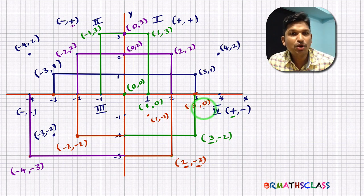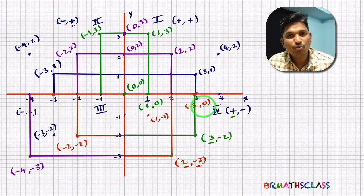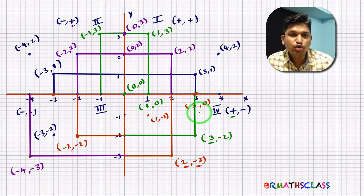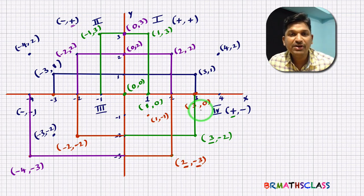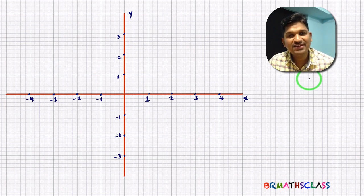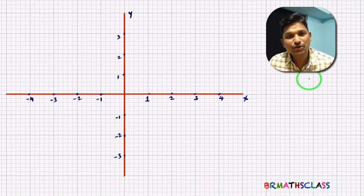In the last class, we learned about what is a coordinate system. In this class, we will learn what are coordinates, what is abscissa, what is ordinate, signs of a point in different coordinates, and how to plot a point on the coordinate axis. We will also learn the definitions of abscissa and ordinate, why origin is (0,0), if a point lies on the x-axis why its y-coordinate is 0, and if a point lies on the y-axis why its x-coordinate is 0.